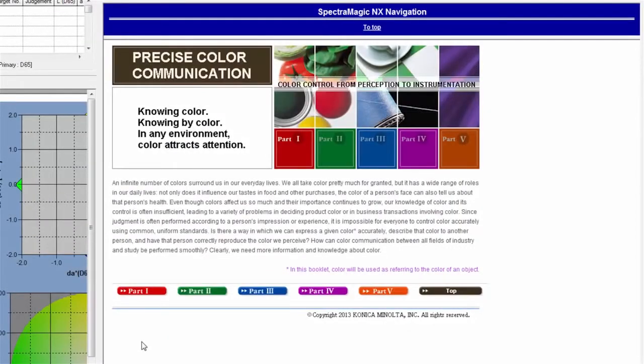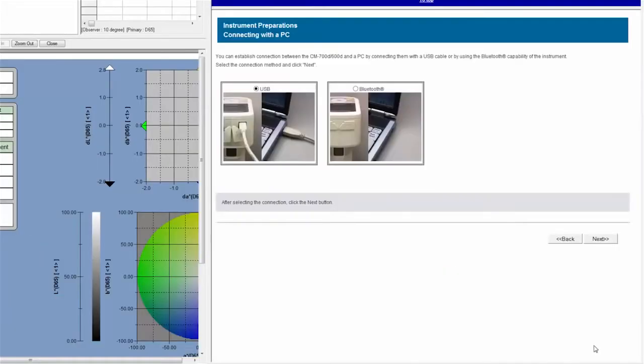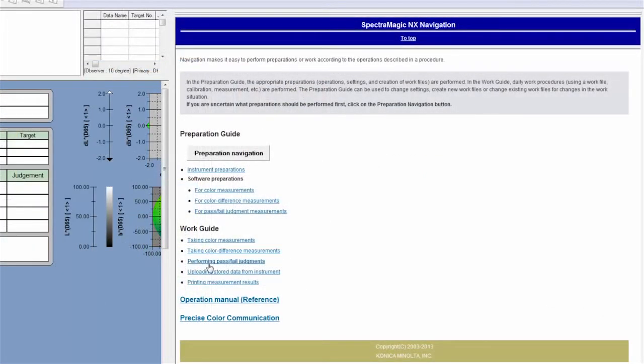SpectraMagic NX is easy to use and includes a step-by-step navigation option within the software. You can even customize this unique feature to match your individual measurement processes.